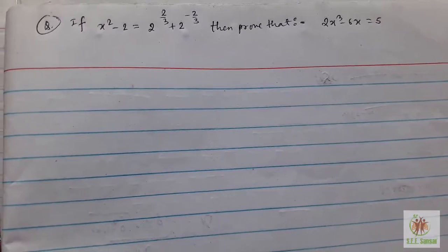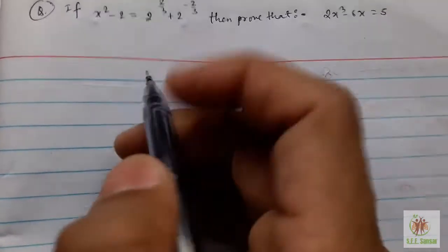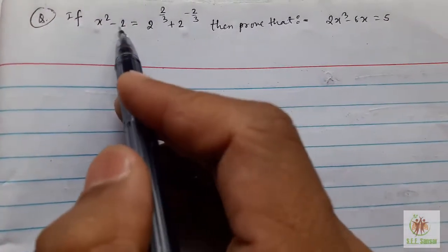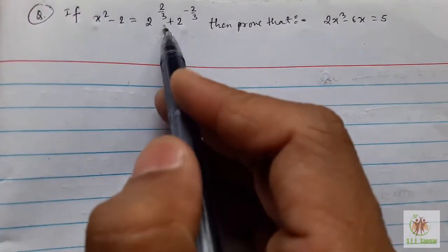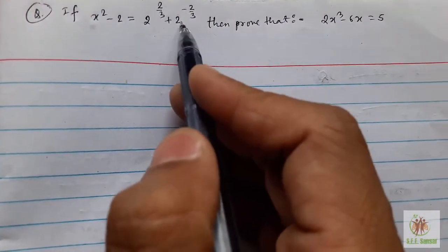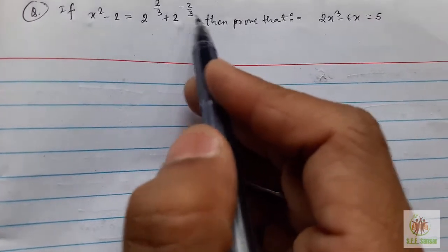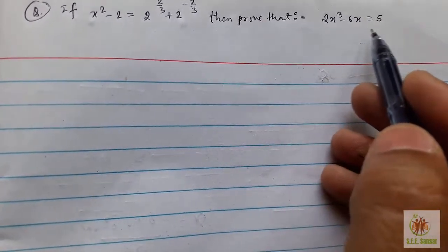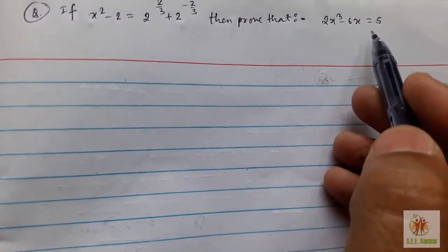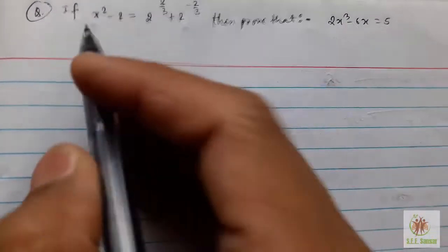The question is: x² - 2 = 2^(2/3) + 2^(-2/3). Prove that 2x³ - 6x = 5.